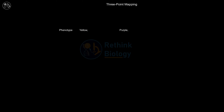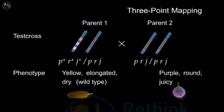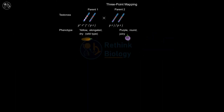A hypothetical plant has three linked genes that control fruit characteristics. A recessive allele of the first gene B determines purple fruit color, while the dominant wild type B+ is yellow. A recessive allele of the second gene R determines round fruit shape, while the dominant wild type R+ is elongated. A recessive allele of the third gene J determines juicy fruit, while the dominant wild type J+ is dry. To determine gene order and distances, a test cross was performed between a triple heterozygote and a triple homozygous recessive, and the offspring were classified and counted.